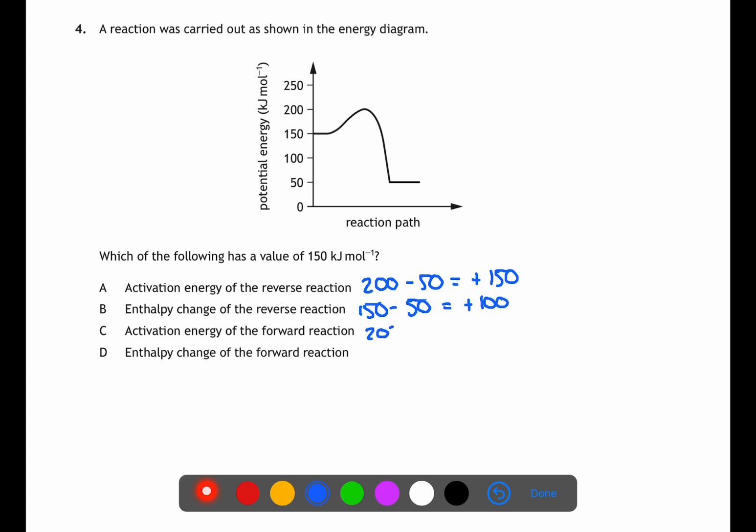The activation energy of the forward reaction is the distance between the reactants and the top of the hill so 200 minus 150 to give plus 50. And finally the enthalpy change for the forward reaction is the products of that reaction minus the reactants so 50 minus 150 to give negative 50. This means that our answer is the activation energy of the reverse reaction A.